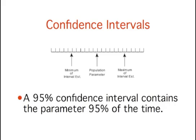Point estimates are usually supplemented by interval estimates, called confidence intervals. Confidence intervals are intervals that contain the population parameter a specified proportion of the time. For instance, a 95% confidence interval would contain the population parameter 95% of the time.